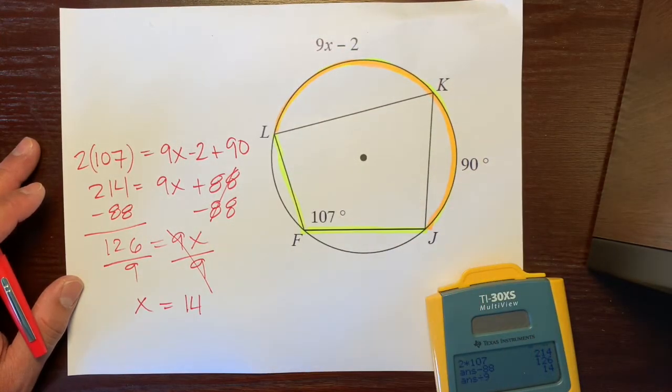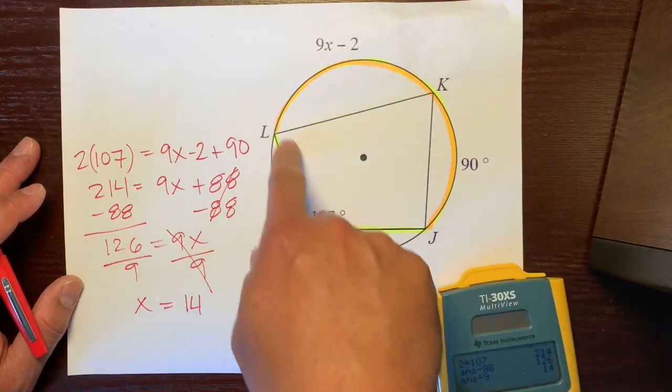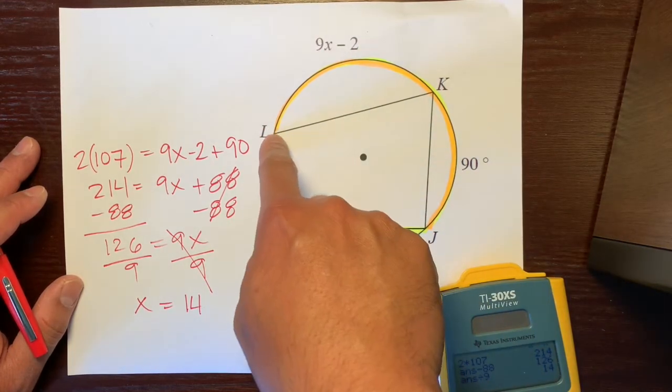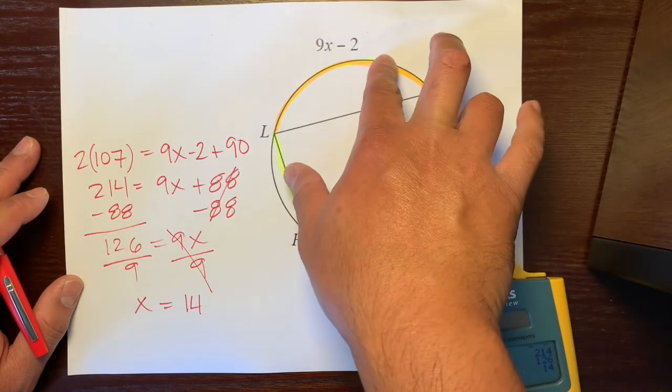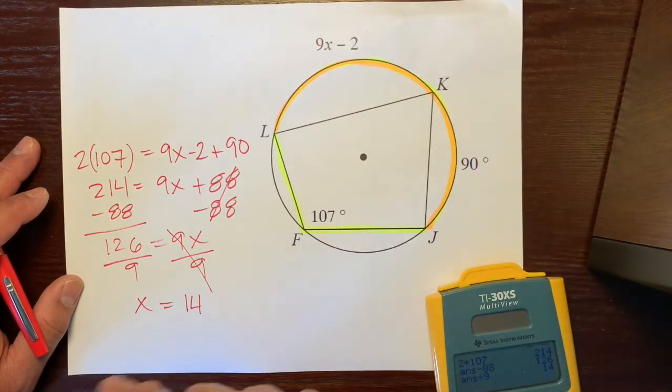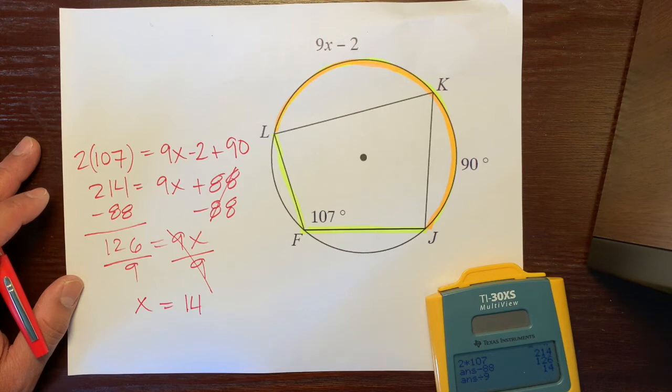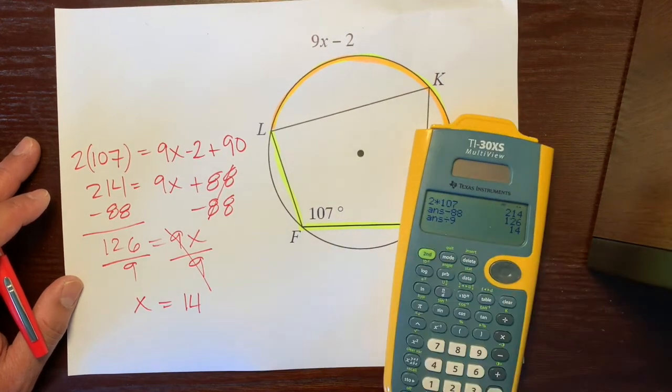And there you have it. That's how you figure out what x is when you have an inscribed angle that eats two arcs. You just add those two arcs together and set it equal to two times that inscribed angle. Hope that helps. Have a great day.